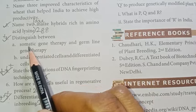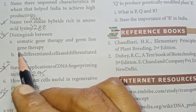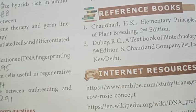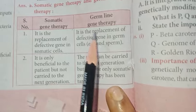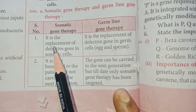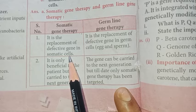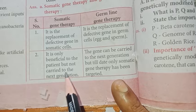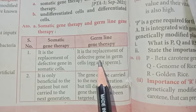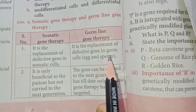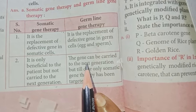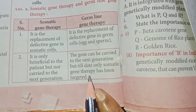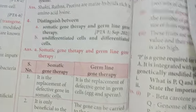Number four: Distinguish between somatic gene therapy and germline gene therapy. Somatic gene therapy: it is the replacement of a defective gene in somatic cells; it is only beneficial to the patient but not carried to the next generation. Germline gene therapy: it is the replacement of a defective gene in germ cells (egg and sperm); the gene can be carried to the next generation, but till date only somatic gene therapy has been targeted.